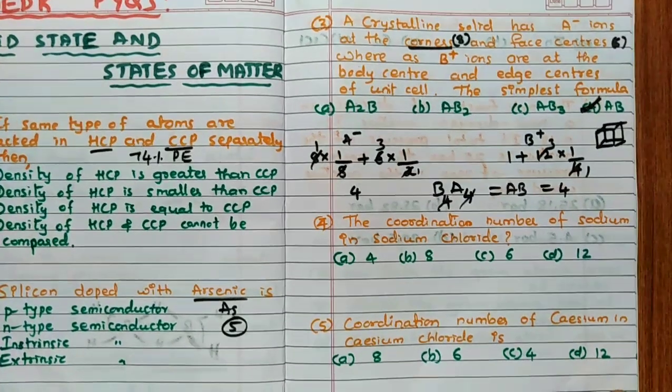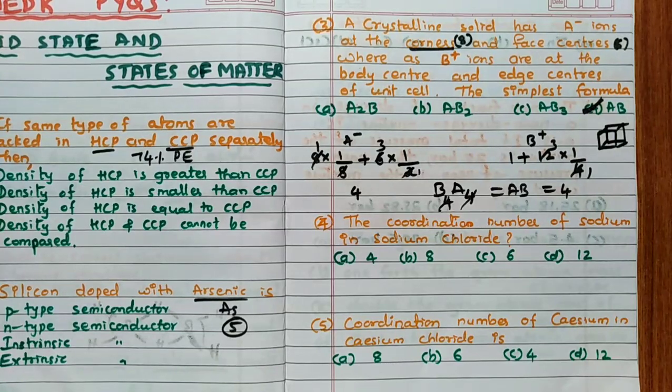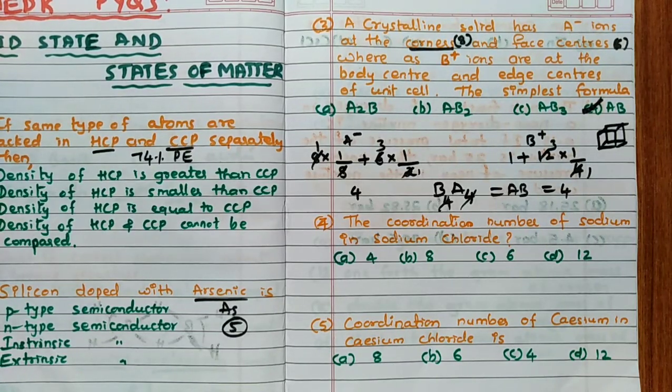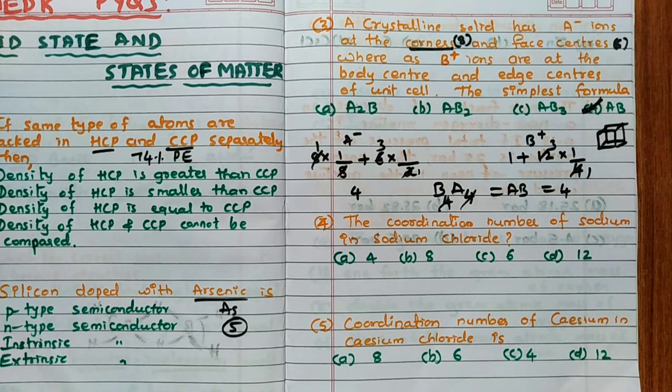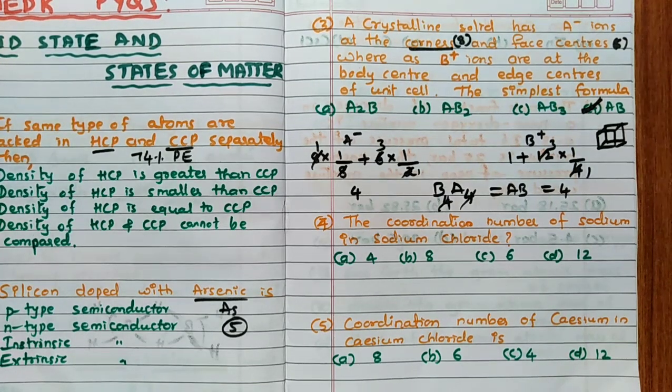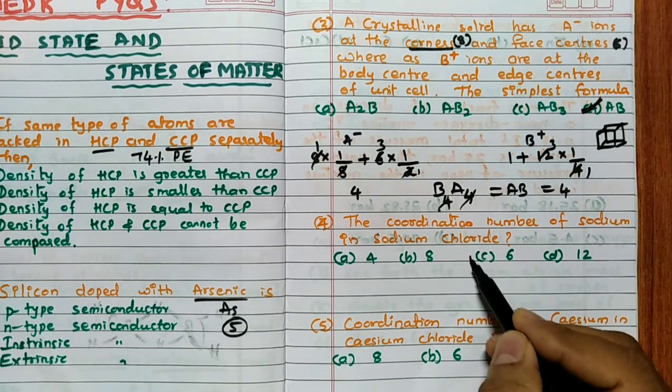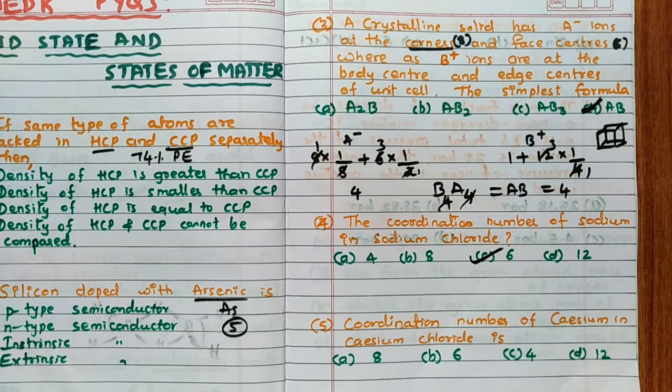Then the coordination number of the sodium in sodium chloride - these things you have to remember, there is no other shortcut. Remember always, sodium in sodium chloride structure is such that 1 sodium surrounded by 6 chlorine and 1 chlorine surrounded by 6 sodium. Hence coordination number is equal to 6.